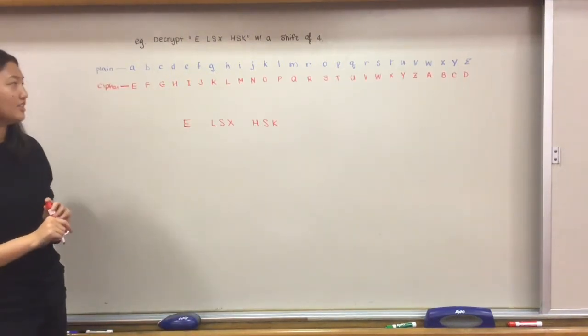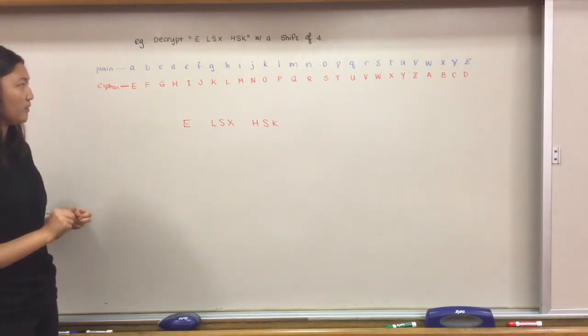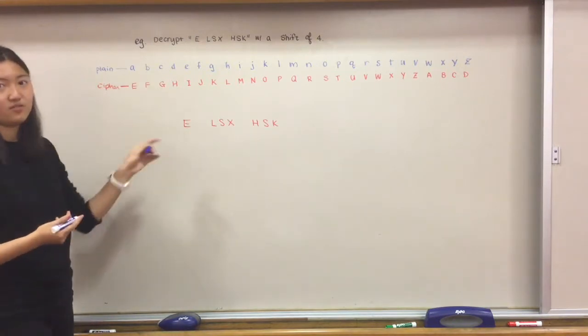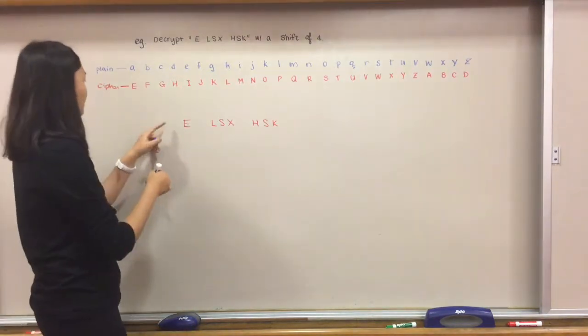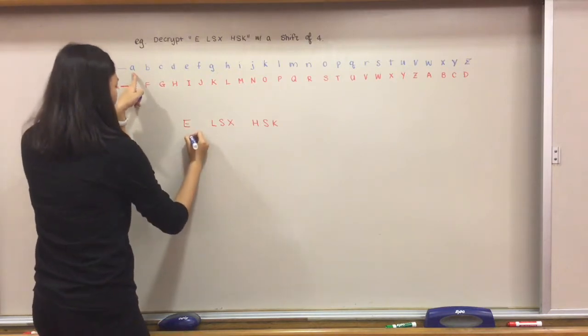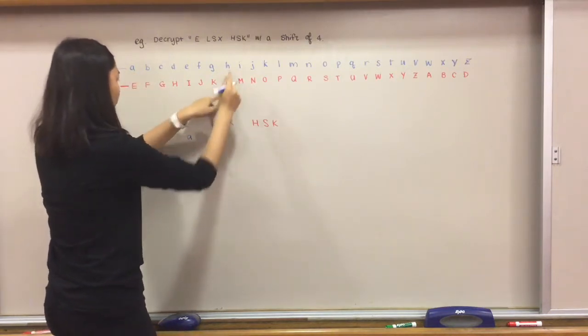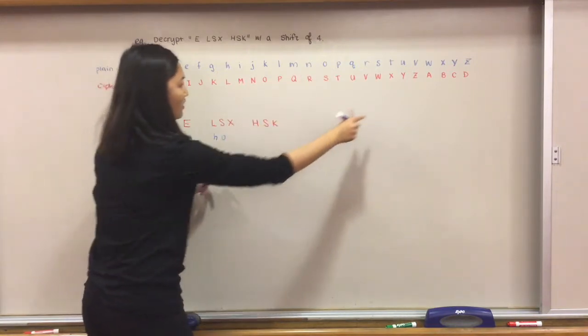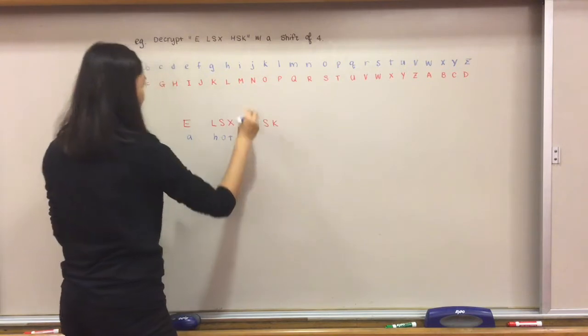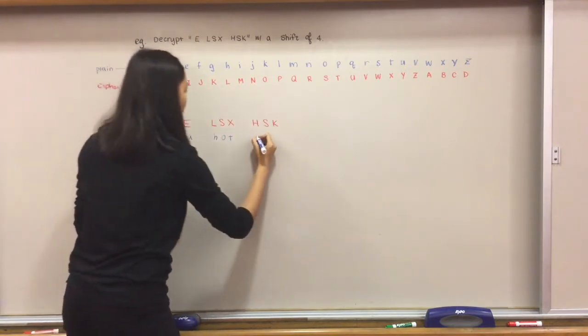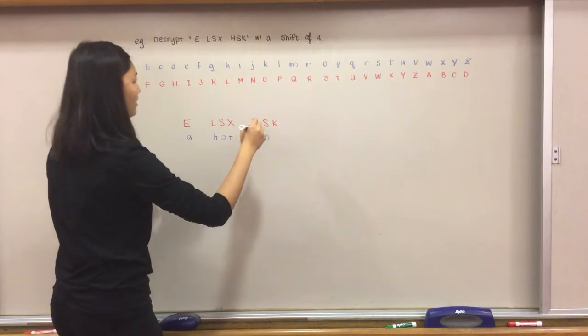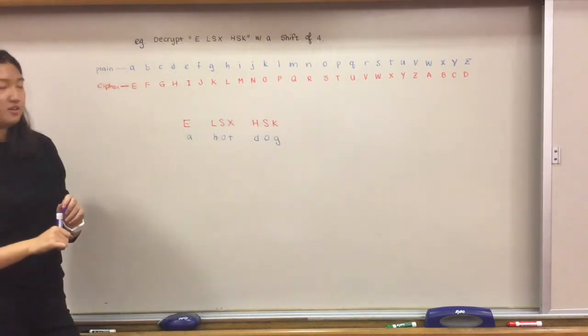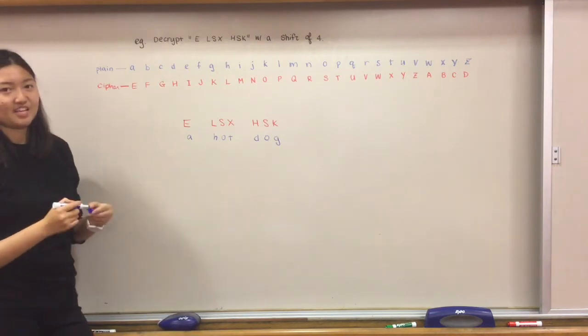Now we are going to again refer back to this table and find out the plain text for this message. We're going to find e here, maps onto a, l is h, s is o, again, and then x is t, h is d, s is o again, and then k is g. So there. Keep in mind that your plain text better make sense.